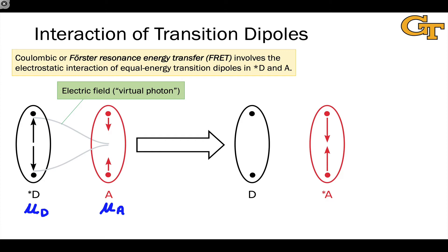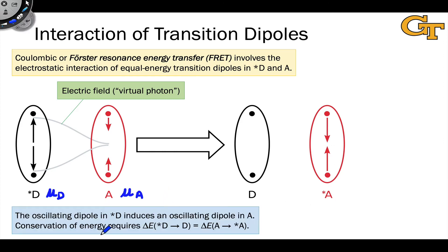That would be trivial energy transfer. This can be distinguished from trivial energy transfer experimentally. The electric field we might call a virtual photon — it is an oscillating electric field, but a discrete photon is not emitted. There's just an electrical or coulombic interaction happening between D-star and A. Actual energy transfer takes place when D settles back into its ground state and A starts oscillating, and A now has a transition dipole moment. A-star is then generated. The oscillating dipole in D-star induces an oscillating dipole in A, creating the excited state A-star.